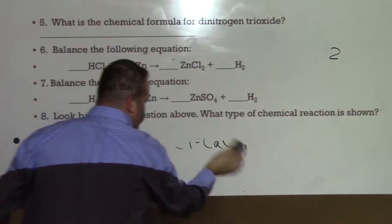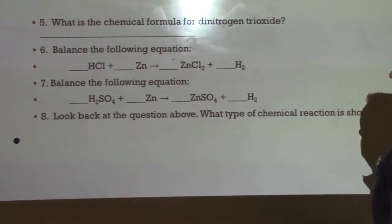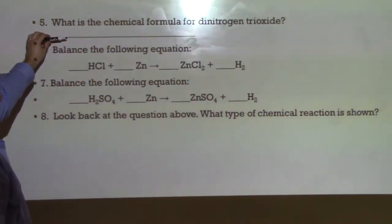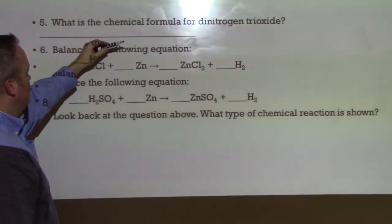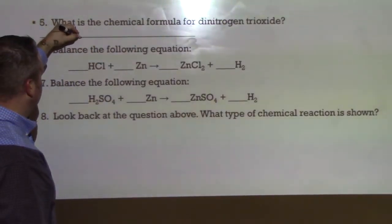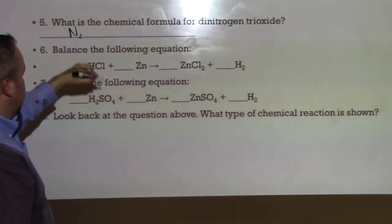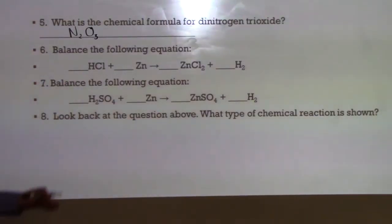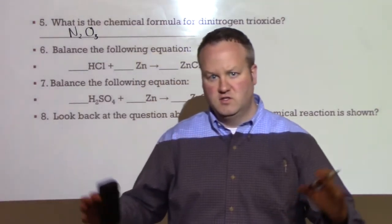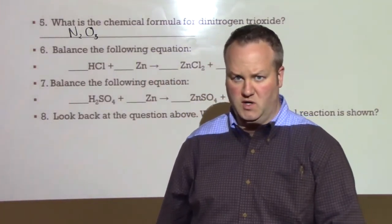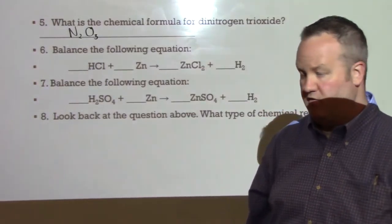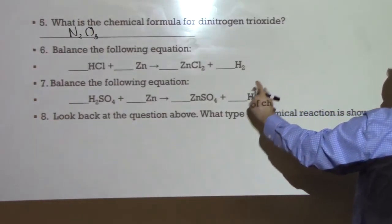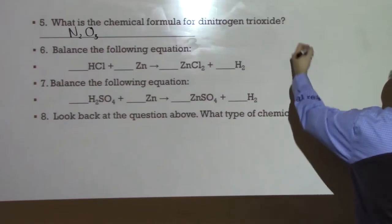Next question. We have a few questions that involve balancing equations and looking for formulas. So the first one is asking, number five asks, what is the chemical formula for dinitrogen trioxide? So if I say dinitrogen, that means two nitrogens. If I say trioxide, that means oxygen, three oxygens. So there's a little bit of confusion about switching the numbers. Those numbers are only for oxidation numbers with ionic bonds. We don't do that with covalent bonds. There's no switching going on with covalent.